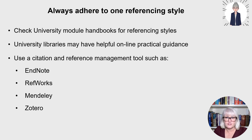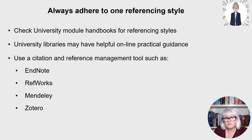Always adhere to one referencing style — you don't want to mix referencing styles. Check your university module handbooks for which referencing styles they allow, such as Harvard, which I'm going to use for examples today. Many universities might say you can use different referencing styles, but the key thing is that you are consistently using one. Many university libraries have helpful online practical guidance too — they might even have leaflets you can take away — providing clear citation and referencing examples, so always check what's available in your library.